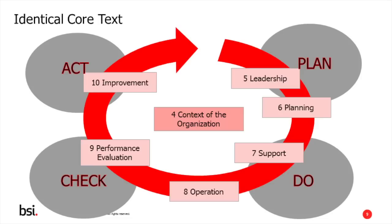Clause 5 and clause 6 are the planning clauses. Section 7 and clause 8 are the doing clauses. Clause 9 is the checking clause, and clause 10 is the act clause. However, it is important to mention that you should apply the plan, do, check, act model to all the processes of the standard. For example, for your management review process, you should plan that process, carry out your management review, check how effective it is, and then take any actions to improve.